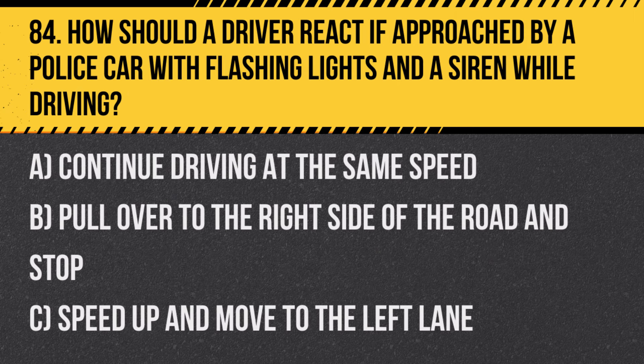Question 84: How should a driver react if approached by a police car with flashing lights and a siren while driving? A. Continue driving at the same speed. B. Pull over to the right side of the road and stop. C. Speed up and move to the left lane. Answer: B. Pull over to the right side of the road and stop. This provides a clear way for emergency vehicles to pass safely.